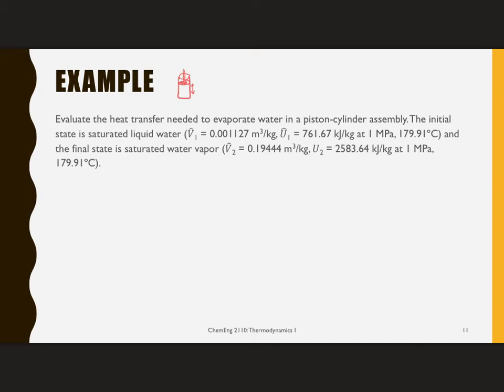This is a closed system. So I am going to start by looking for the correct form of the first law or the energy balance. We have the mass at the end time times the total energy at the end, minus the mass at the initial time times the total energy at the initial time, is equal to the shaft work plus the expansion and contraction work plus the heat transfer.